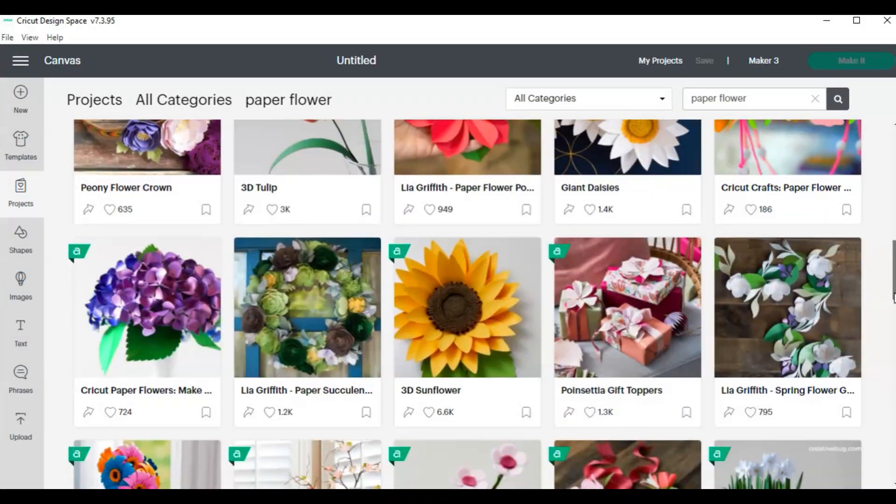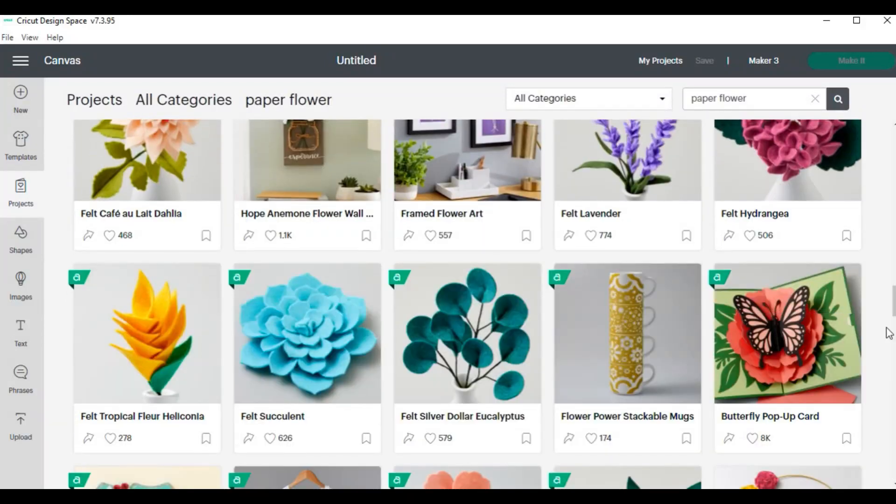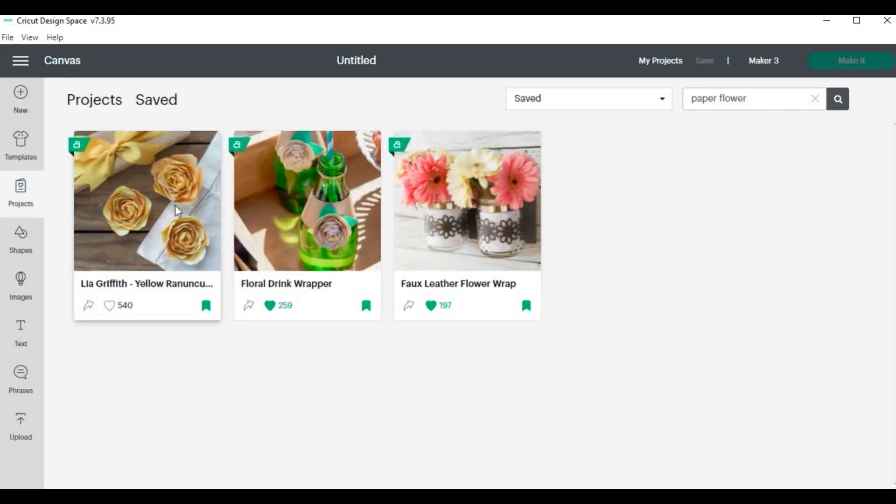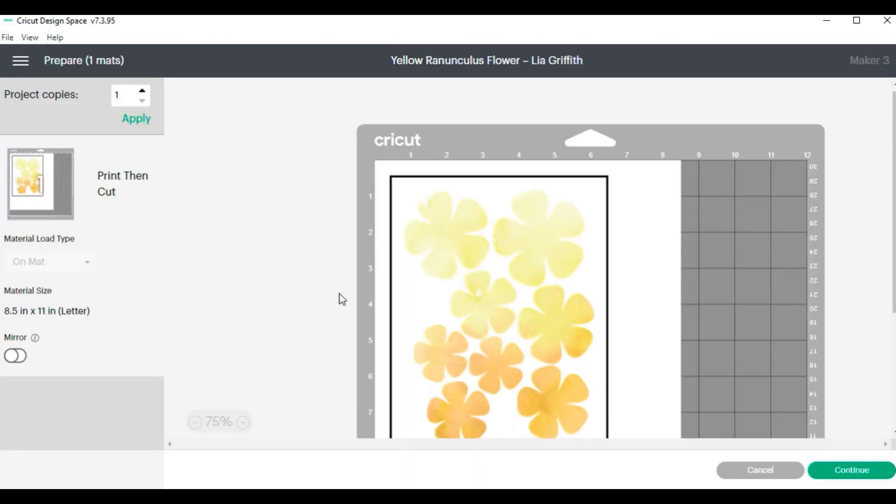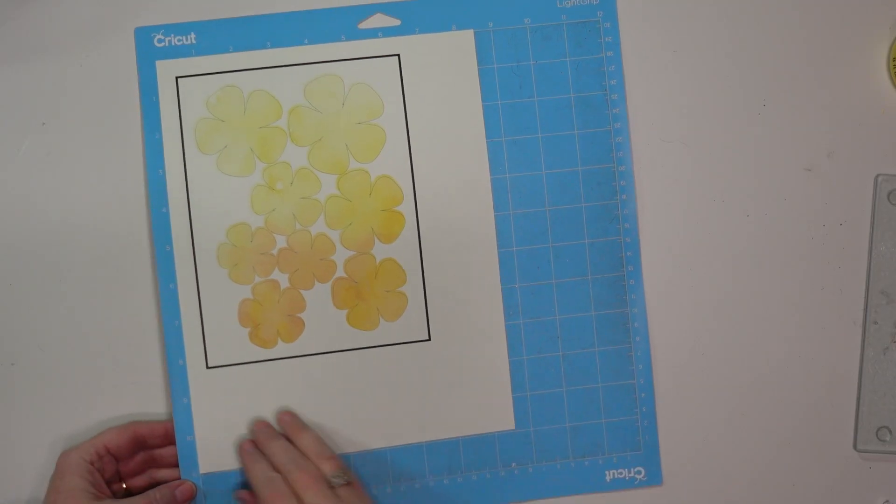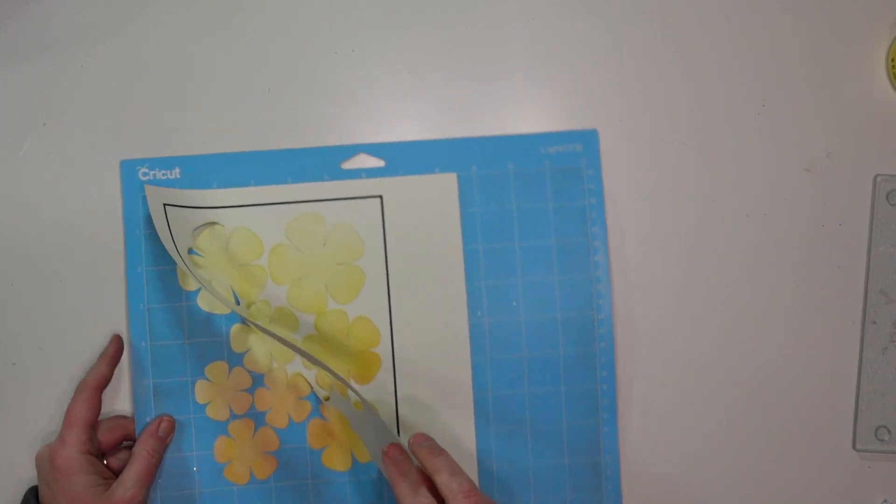Design Space not only has hundreds of designs to cut out, but it also has a lot of project ideas. I found this yellow ranunculus flower project and I printed out the instructions as well as the design on my printer, and then I am using the Cricut to cut out these flowers.